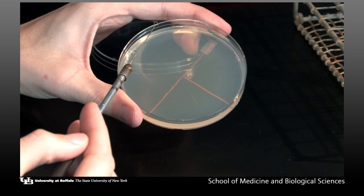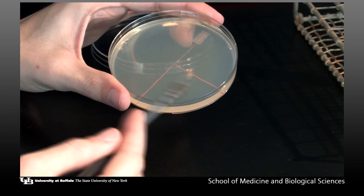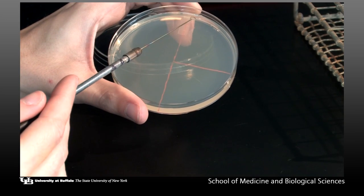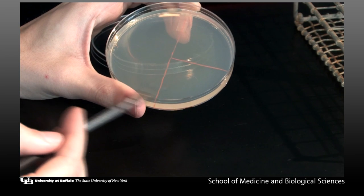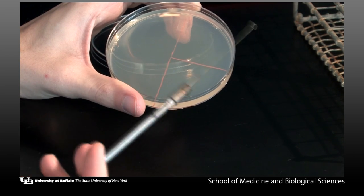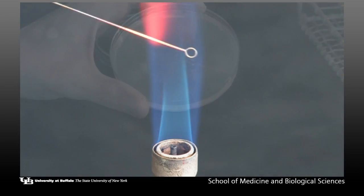Rotate the plate for inoculation of the next section. Beginning at one end of the first streak pattern, draw three to four streak lines from the first to second section, then continue streaking the second section only. When the second section is completely streaked, flame the loop.